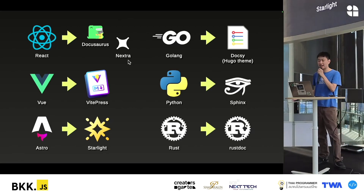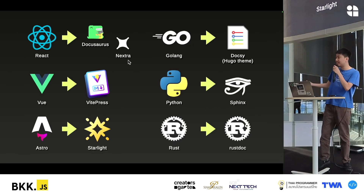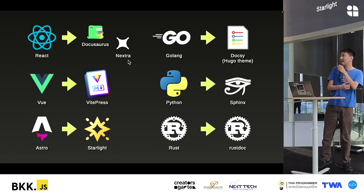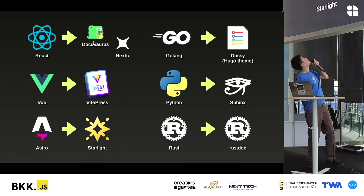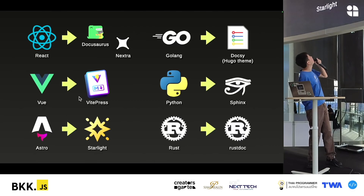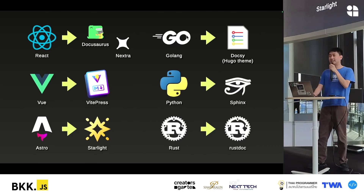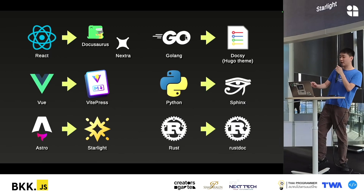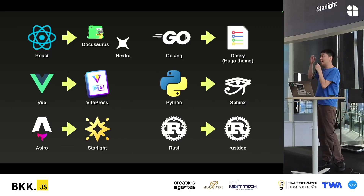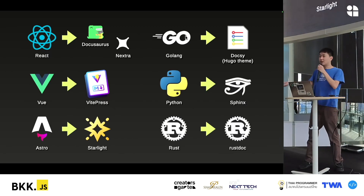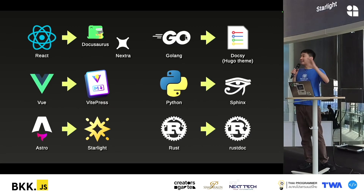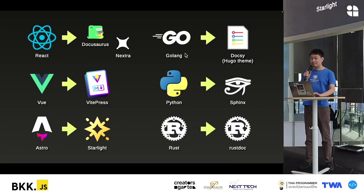Static Site Generators are used to create documentation or websites. If you use React, there will be DocuSaurus and Nextra. If you use Astro, there will be Starlight. If you use other languages like Go, Python, or Rust, those languages can also be used to create documentation sites, but the interface will be different.